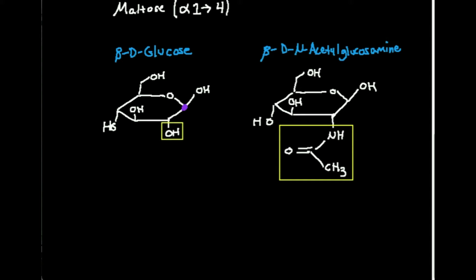In different organisms — and we can actually do this too in some cases — we can take certain functional groups on the ring and modify them. One of the ways is by taking this position, the two position for glucose, and taking the two-position hydroxyl group and replacing it with an acetyl group. The acetyl group is attached not to an oxygen, but to a nitrogen. So the OH has been completely removed and replaced by a nitrogen.